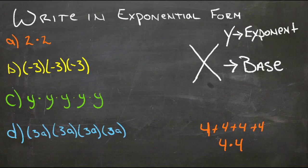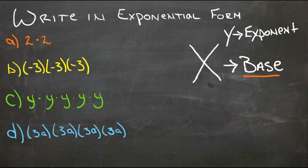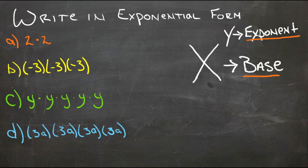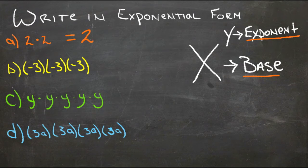We use exponents to repeat multiplication by taking the number we're multiplying by itself and putting it on the bottom — that's called the base — and then the number of times we multiply that number, written up above and to the right, is called the exponent. For instance, our first example: 2 times 2 is taking the number 2 and multiplying it by itself.